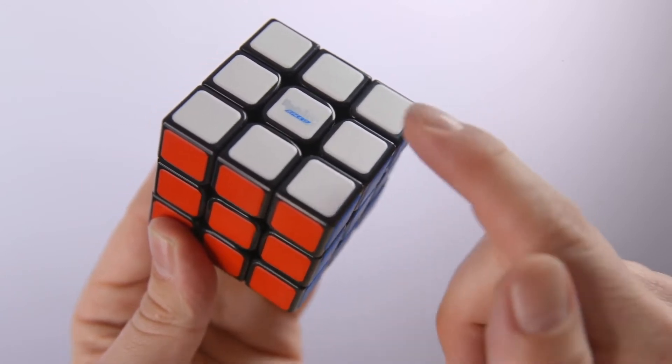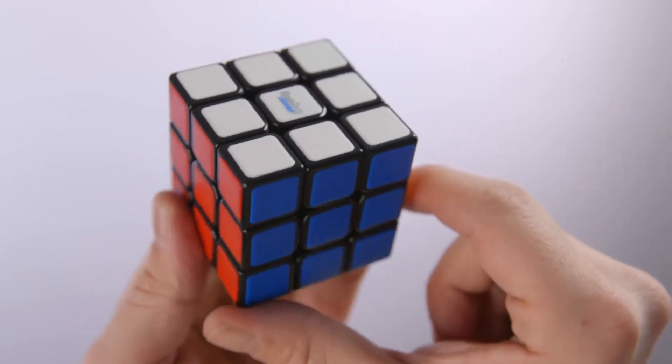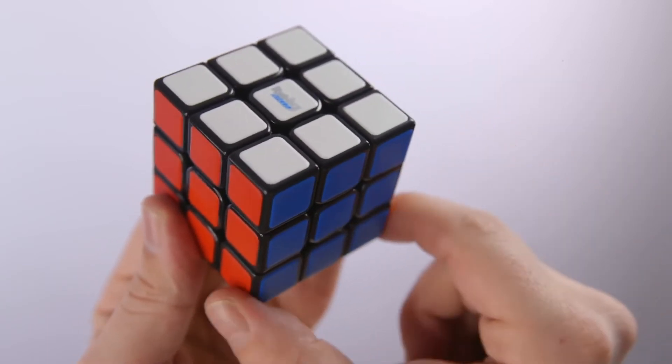Now we have the edge pieces. They have two colors. They are called edge pieces as they are always on the edge of two sides.